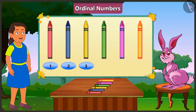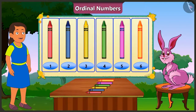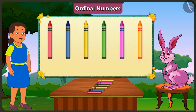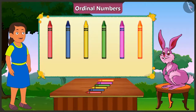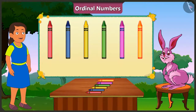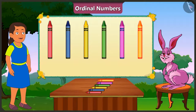Look, Bubbly, there are a total of six crayons here. When we need to know the position of something, we don't have to count them all. I did not understand, Bunny. Okay, let me explain.